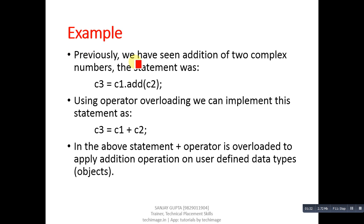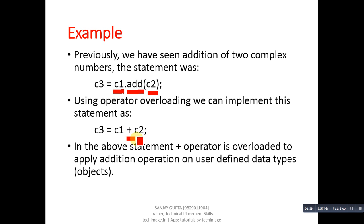Previously we saw addition of two complex numbers where the statement was 'c3 = c1.add(c2)' — 'add' being the function name, c1 passed implicitly and c2 passed explicitly. Using operator overloading we can implement this as 'c3 = c1 + c2', where plus is applied on c1 and c2, which are user-defined types. So the plus operator is overloaded to apply addition on user-defined data types.